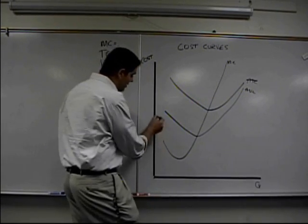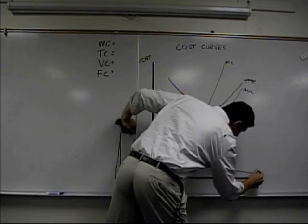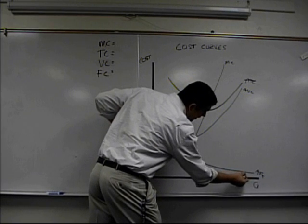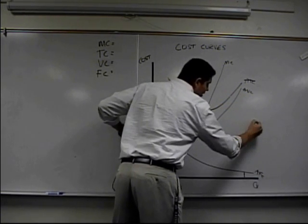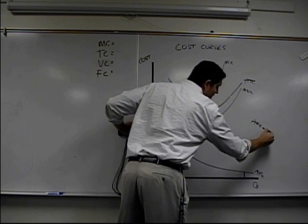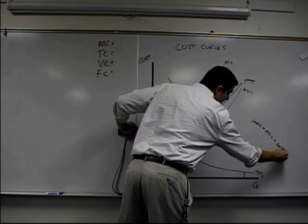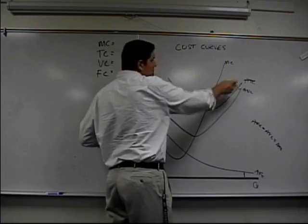The reason why is because of this. This is average fixed cost. This quantity right here, that quantity is the same as that. AFC plus AVC equals ATC. So this plus this is going to be your ATC.